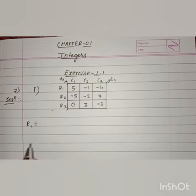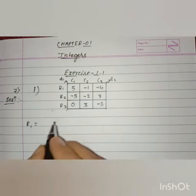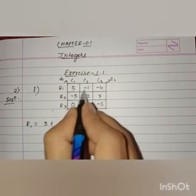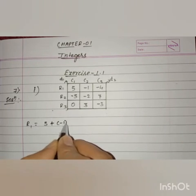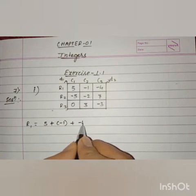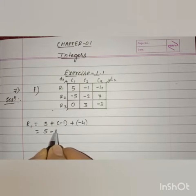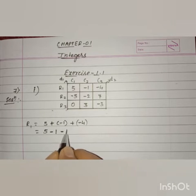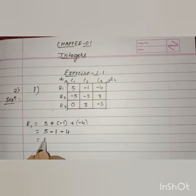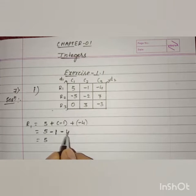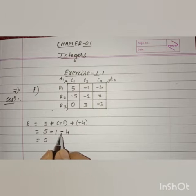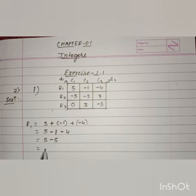Let us find out the sum of row 1. In row 1 we have 5 plus minus 1 plus minus 4. So 5 as it is, plus into minus is minus; so we have two negative integers: minus 1 minus 4 is minus 5. Then 5 minus 5 is 0. So the sum of row 1 is 0.